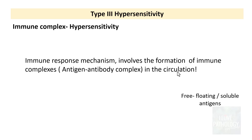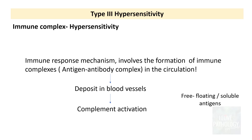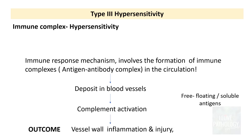Unlike type 2 hypersensitivity where the antigens were on cell surfaces or tissue, in type 3 hypersensitivity it is all about free-floating or soluble antigens. When the antigen-antibody complex is formed, it is deposited in the blood vessels and then there is activation of complement, which leads to inflammation and injury.